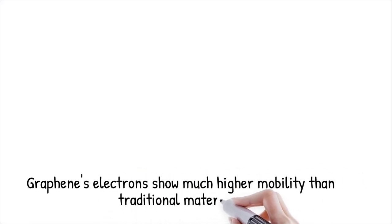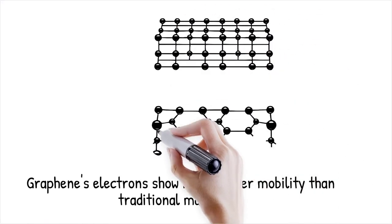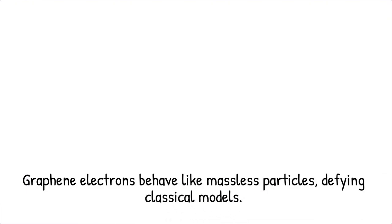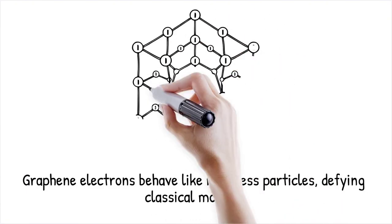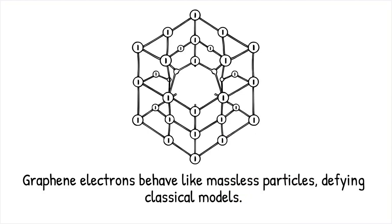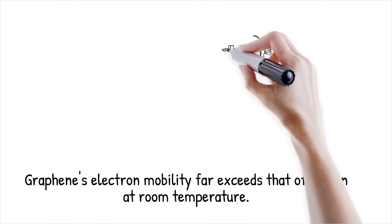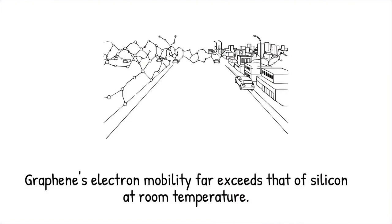In conventional materials, electrons move through a lattice and experience scattering from defects, phonons, and impurities, leading to electrical resistance. Graphene, a single layer of carbon atoms arranged in a hexagonal lattice, exhibits electron mobility orders of magnitude higher than traditional semiconductors. This defies classical transport models, as electrons in graphene behave more like massless, relativistic particles than conventional charge carriers. Silicon, for example, has an electron mobility of about 1,400 cm²/Vs, whereas graphene can exceed 200,000 cm²/Vs at room temperature. Graphene's electrons move as if on a superhighway with no speed limits, while conventional materials resemble crowded city streets full of obstacles.